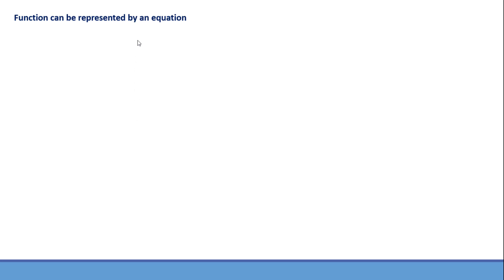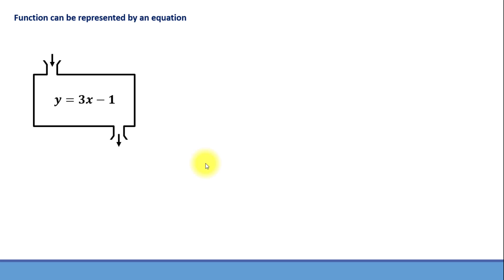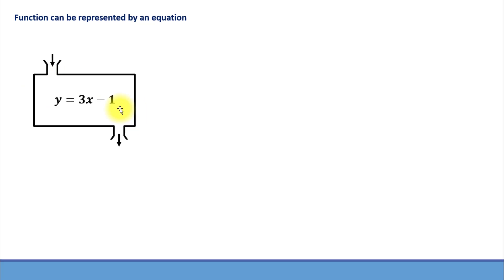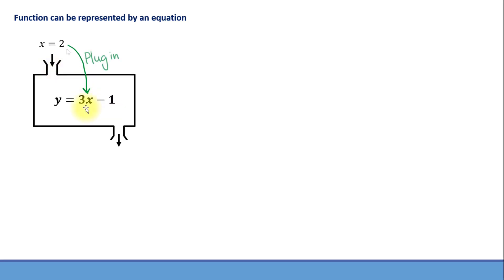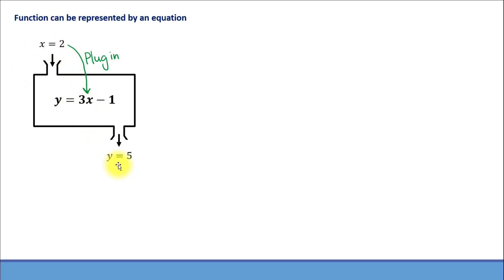Finally, let's talk about another very popular way to represent a function, and that's an equation. Here's an example: y = 3x − 1 is an equation that defines a function. It basically tells us what output is going to be produced by a given input. For example, let's use input x = 2. To determine the corresponding output, we simply plug 2 into the equation for x, simplify, and obtain the output. So 3 times 2 is 6, minus 1 is 5. So for input x = 2, the corresponding output is y = 5.